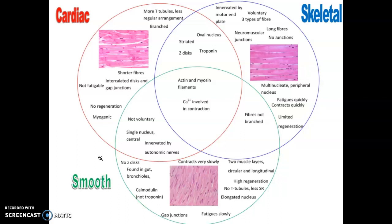I Google searched a Venn diagram of muscle types. On the test, I'm going to give you characteristics of cardiac muscle, skeletal muscle, and smooth muscle, and there will be six choices: skeletal, cardiac, smooth, skeletal and cardiac, skeletal and smooth, smooth and cardiac, or all three of them.